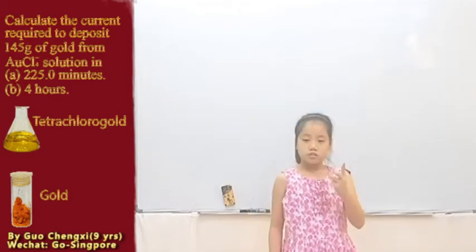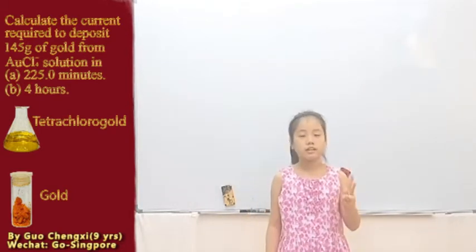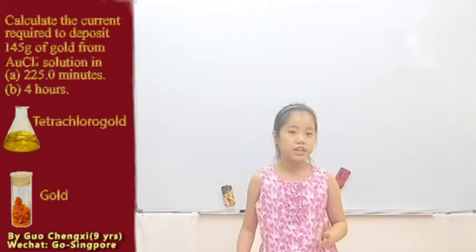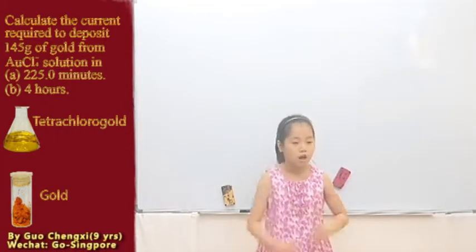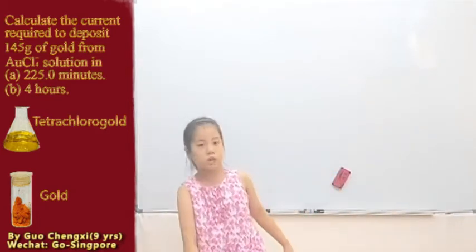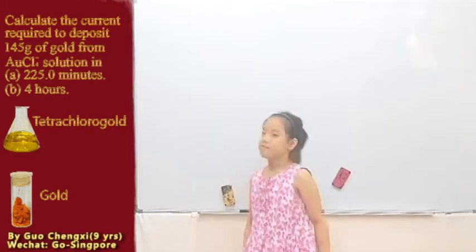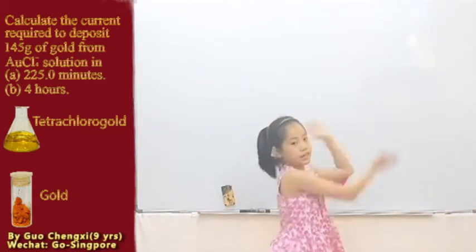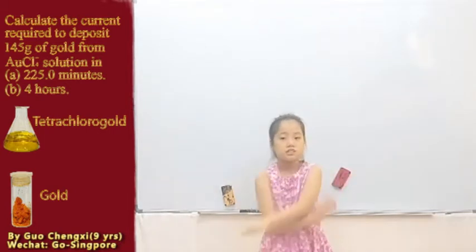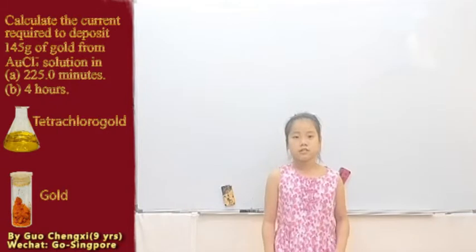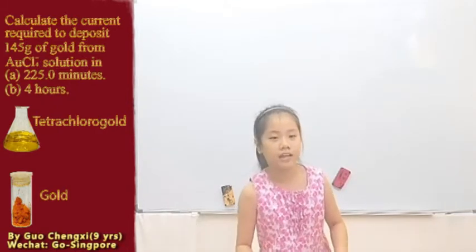The third one is specific heat capacity at constant volume. Then after that, there's entropy change. And last but not least, there is also the chemical potential.